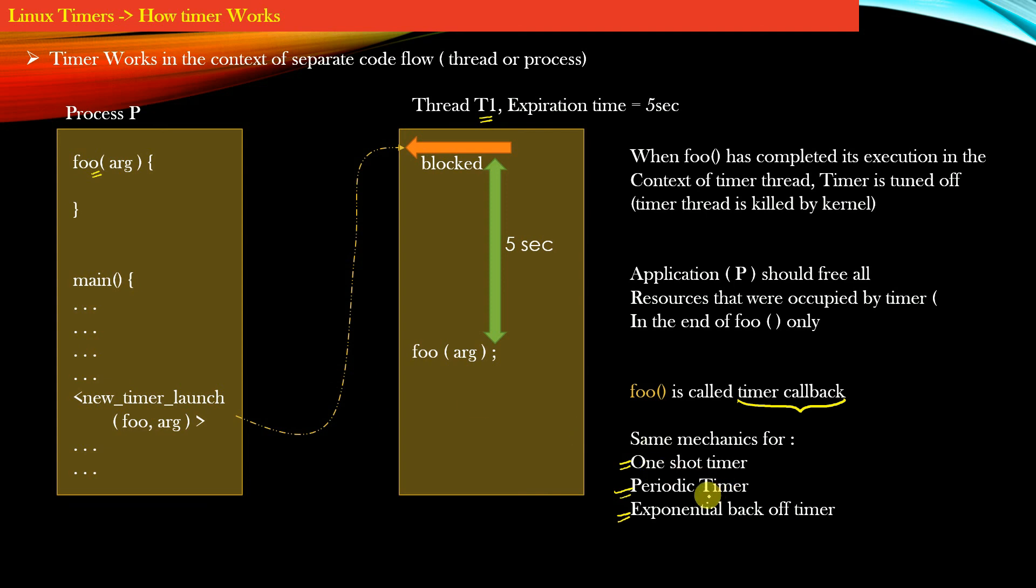Whereas in case of periodic timer, once the function foo completes its execution, the operating system puts the thread T1 in the blocked state again. And after again 5 seconds has elapsed, then again the function foo is called. And this cycle repeats forever.